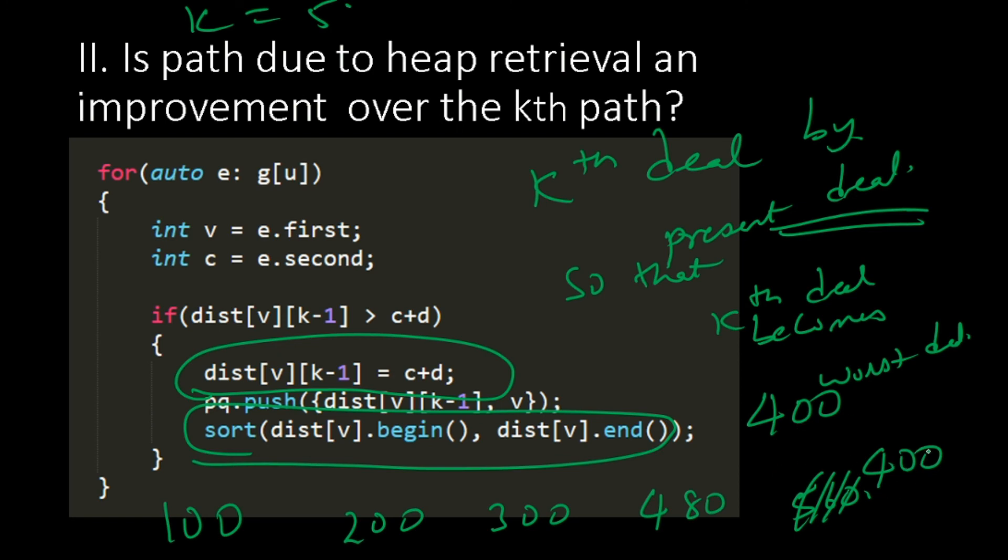Step 2. When you will sort. When you sort, this $400 comes here. So this becomes $400. And this $480 comes here. So this becomes $480. So the advantage is the kth deal. That is the fifth deal becomes the worst deal again.